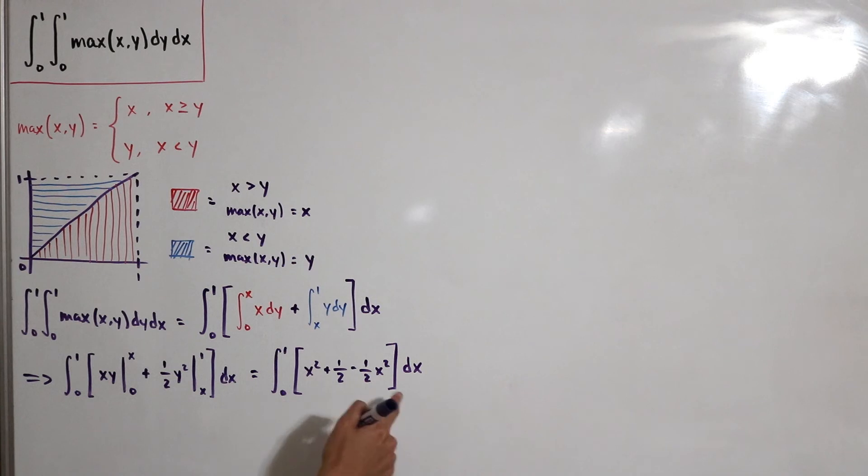This is super easy to integrate because now we're just dealing with x's. This is our standard definite integral. We have x squared plus one half, then minus one half x squared dx.